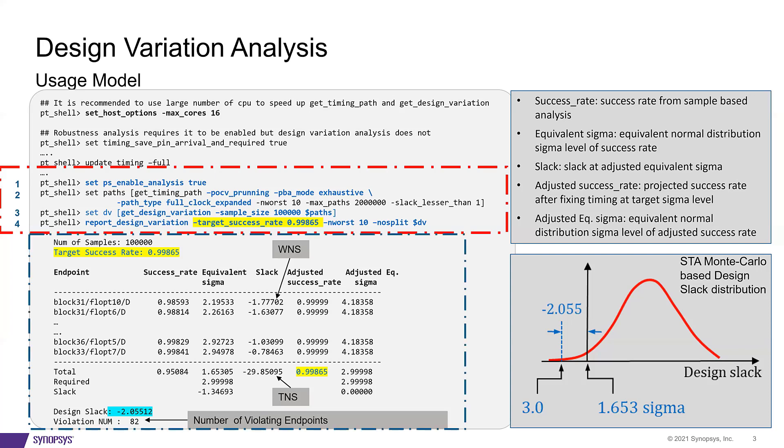The DVA report shown at the bottom has six columns. Let's see how to interpret that. The first column is a path endpoint. The second is the success rate, which shows the success rate of the corresponding endpoint, which is probability that the path has a slack of at least zero.